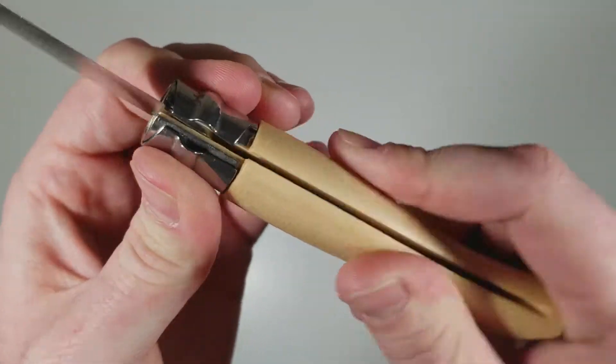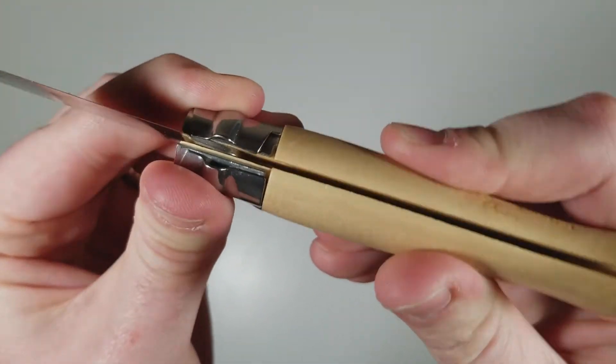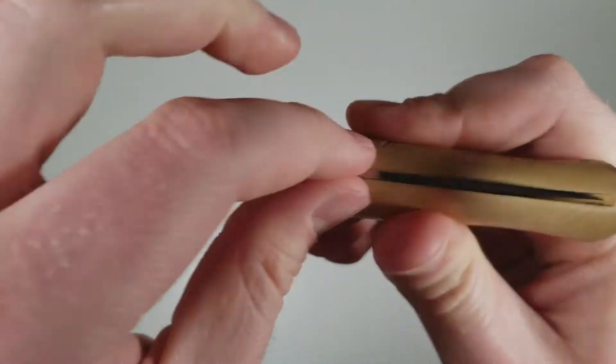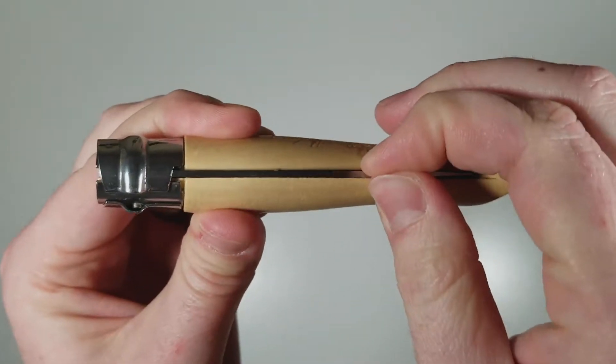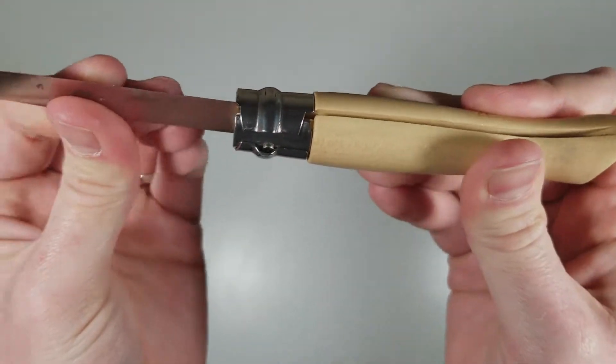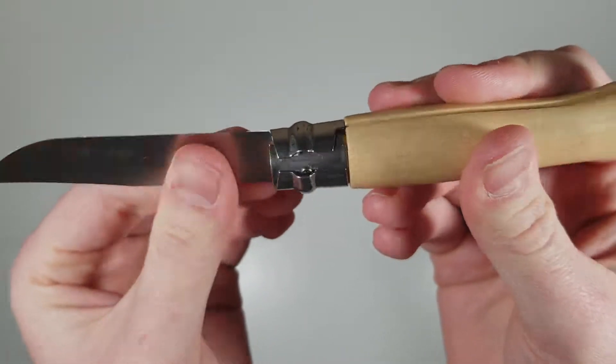The locking mechanism is unique. Basically, you leave the slot open to close it. When you twist it, you can't get the blade out. When you twist it back, the blade can't close. So it's a pretty secure locking system.